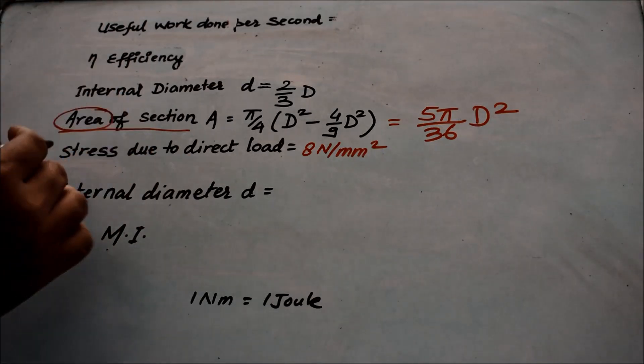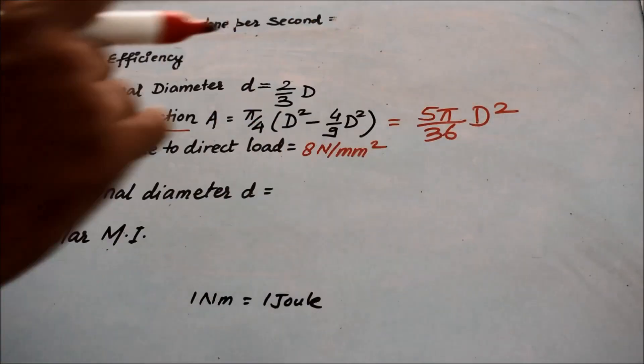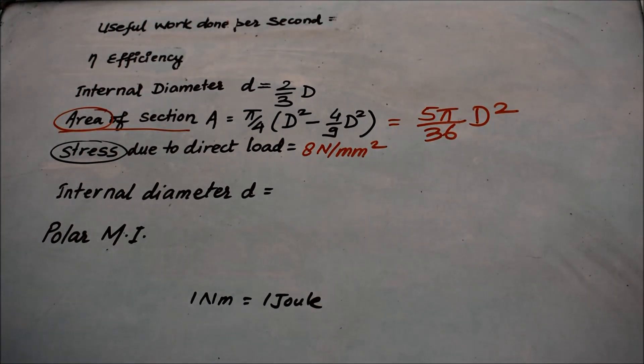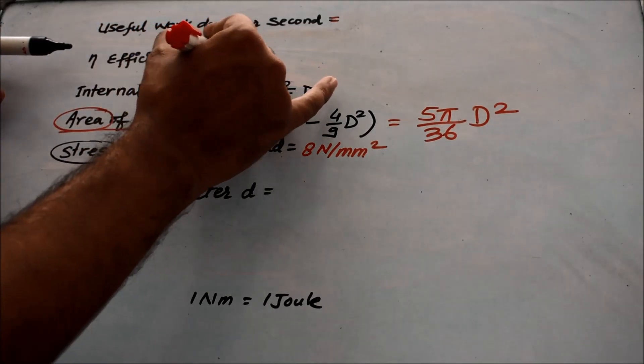If I have to find stress, only two things are required: force and area. Area is already known to me, and now I will use the given data and the value of efficiency for finding the force that is applied on the shaft. Remember, a shaft is a shaft and it has some basic properties like torsion. Torsional formula will be applicable to it, so do not get confused.